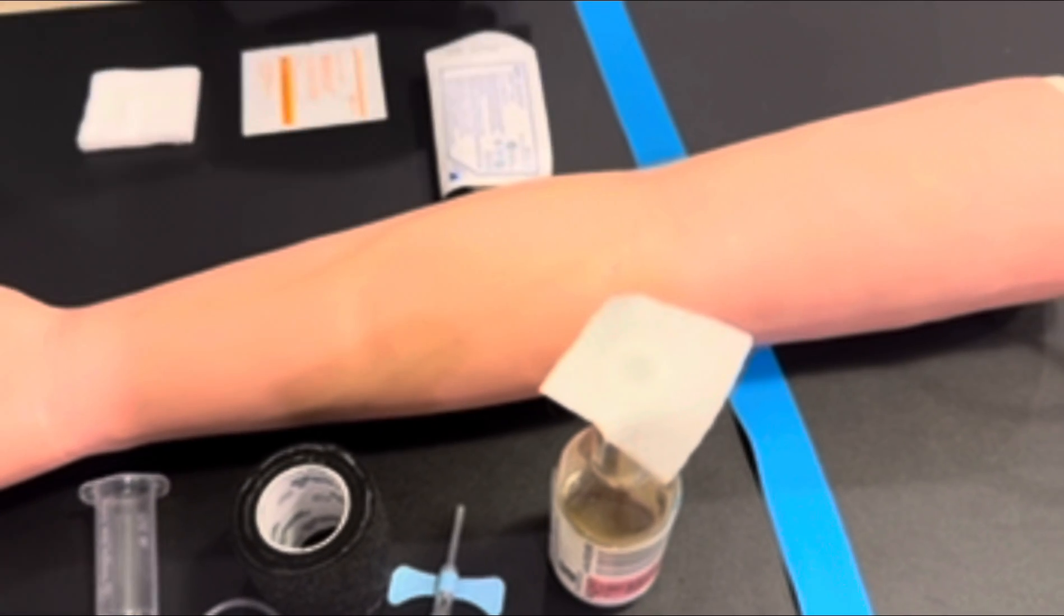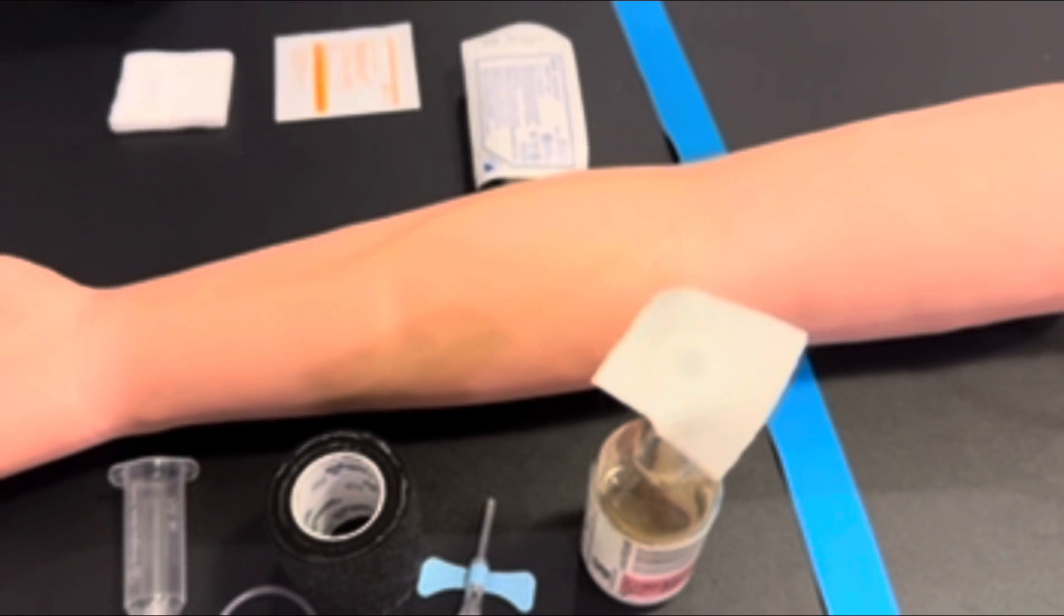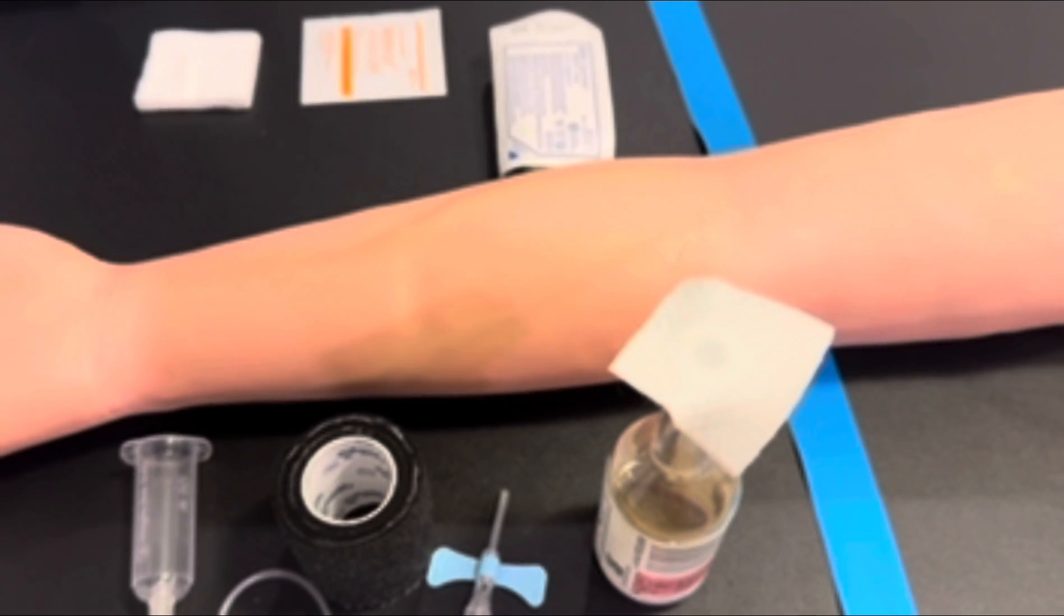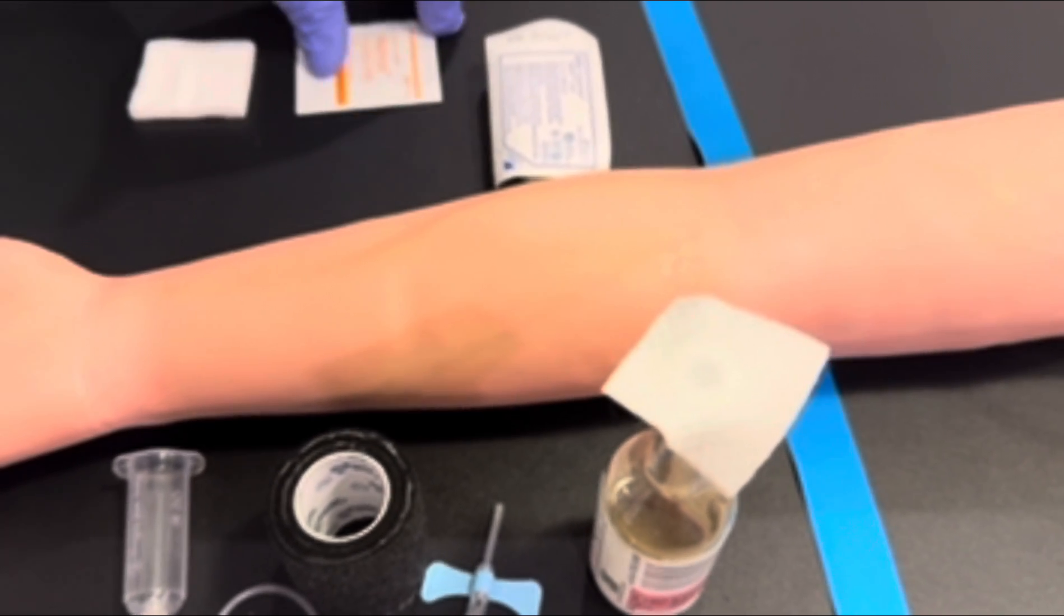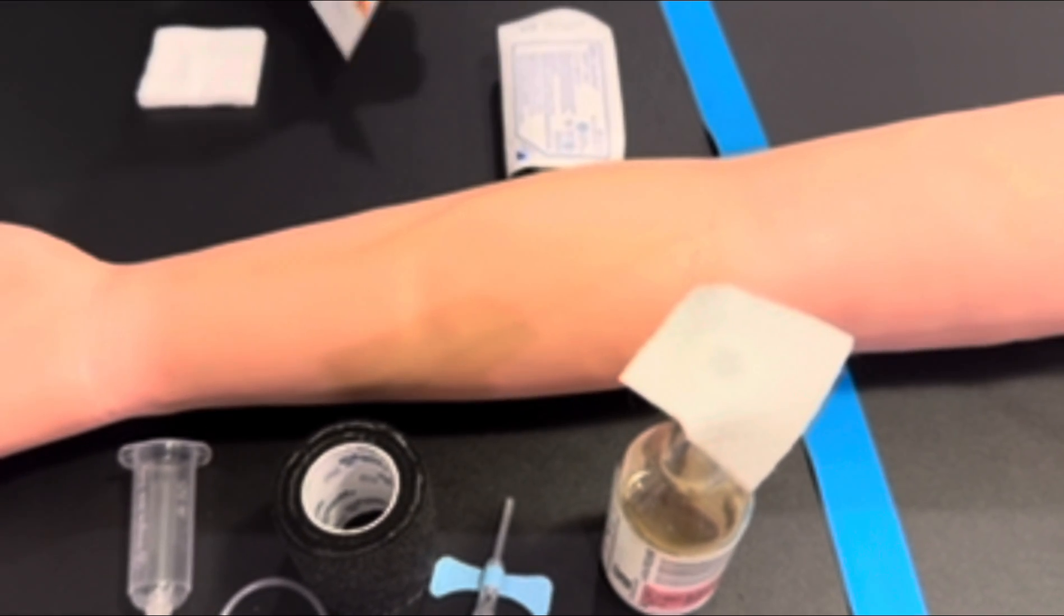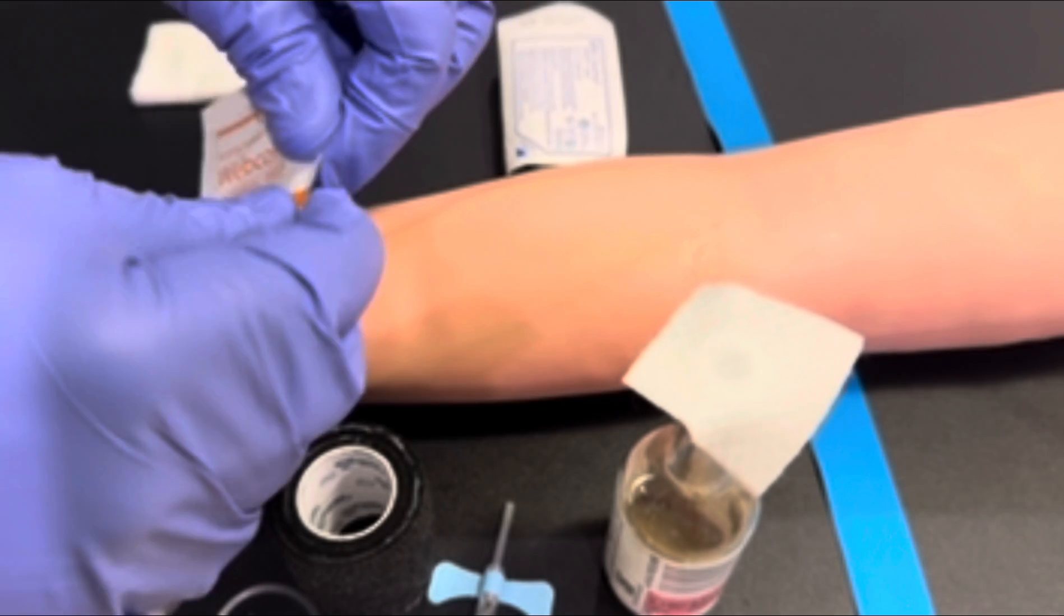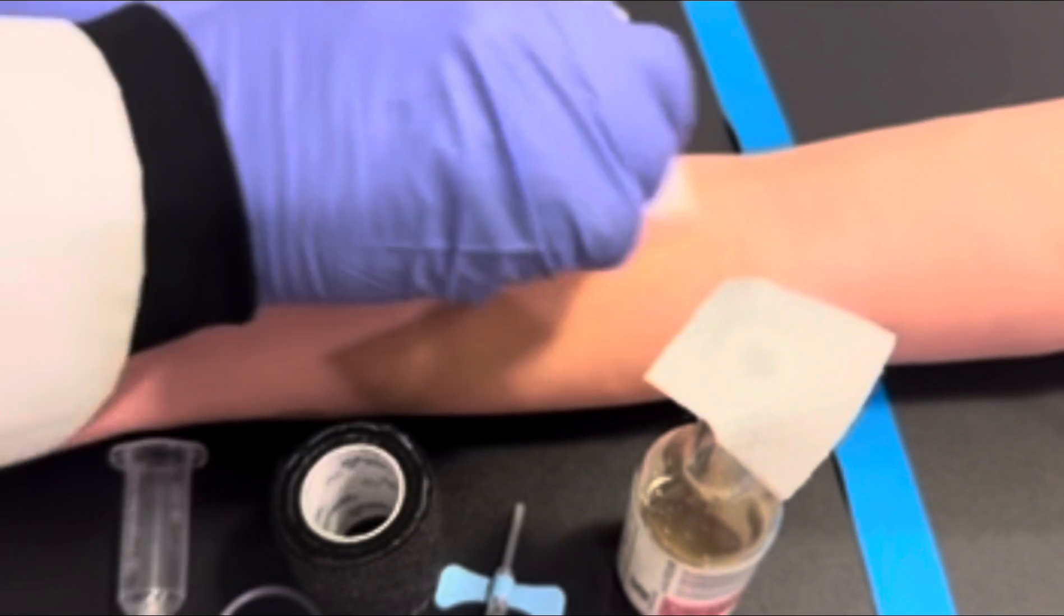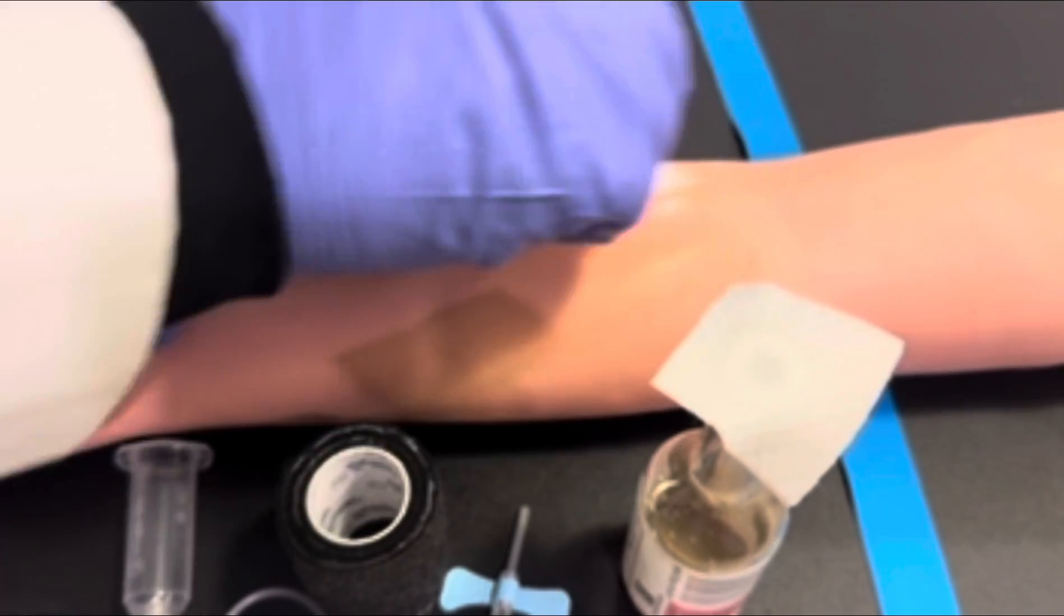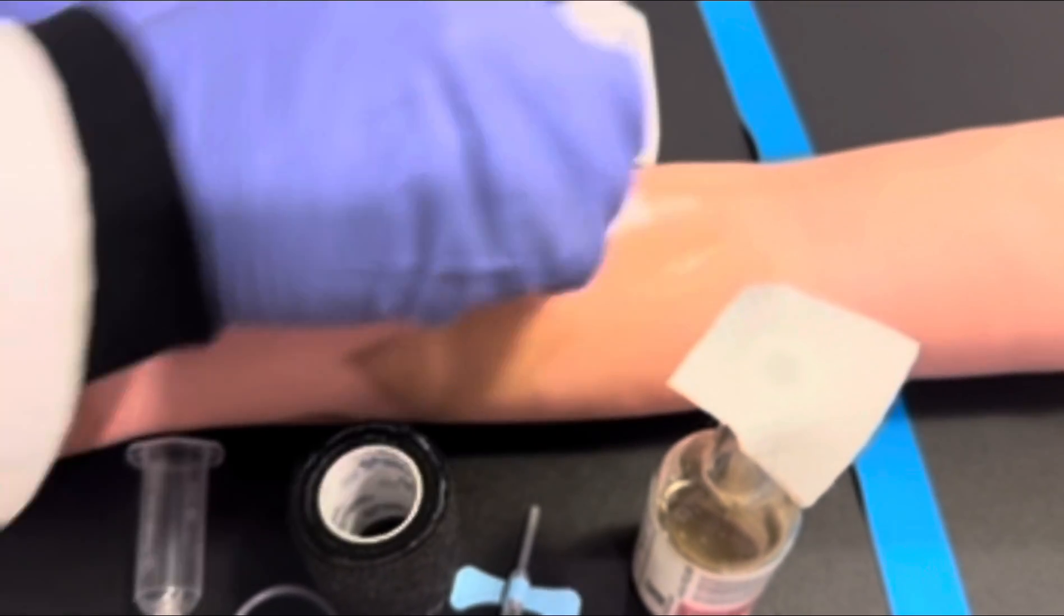The most crucial aspect of blood culture collection is this is an aseptic procedure. We want to make sure that the venipuncture site is completely clean and sterile. So with that being said, we are going to clean the venipuncture site twice using two antiseptics.